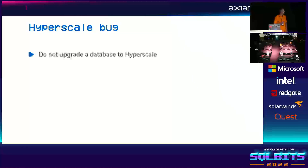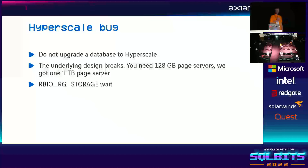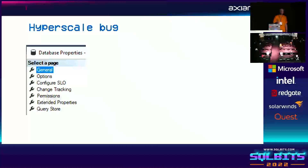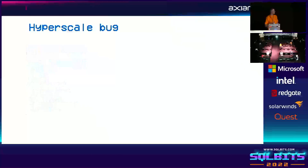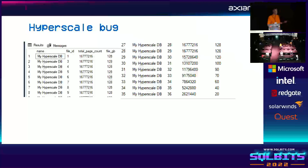You also need to look at your restores because backups are snapshots — when you do a restore on a small table you get settings you may not want, unless you want to sponsor Microsoft. Check your settings. We hit a Hyperscale bug: do not upgrade your database to Hyperscale because the underlying design might break. We were supposed to get a 128 gigabyte page server but got a one terabyte one that didn't perform at all. We identified it because the RBIO RG storage wait came up a lot — you're not supposed to get that.